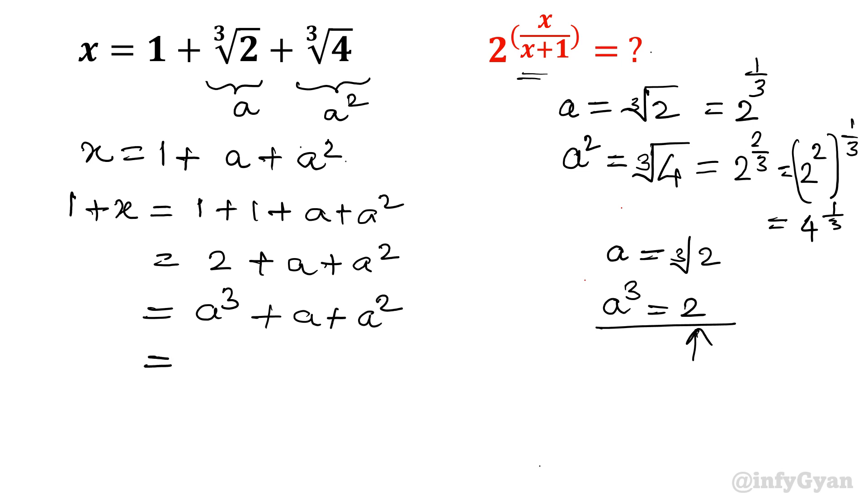Now take a common. Then it will become a square plus 1 plus a. In other words, a square arranging in order only, a plus 1. Now see what is x, 1 plus a plus a square. So it is ultimately a times x. 1 plus x is equal to a times x.